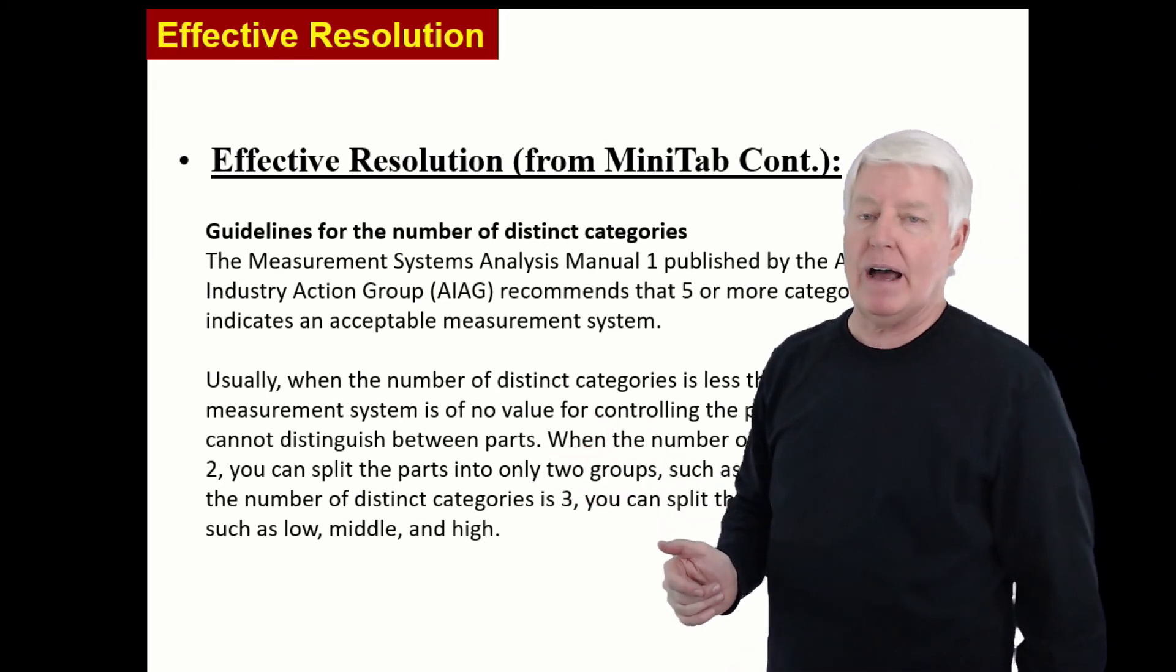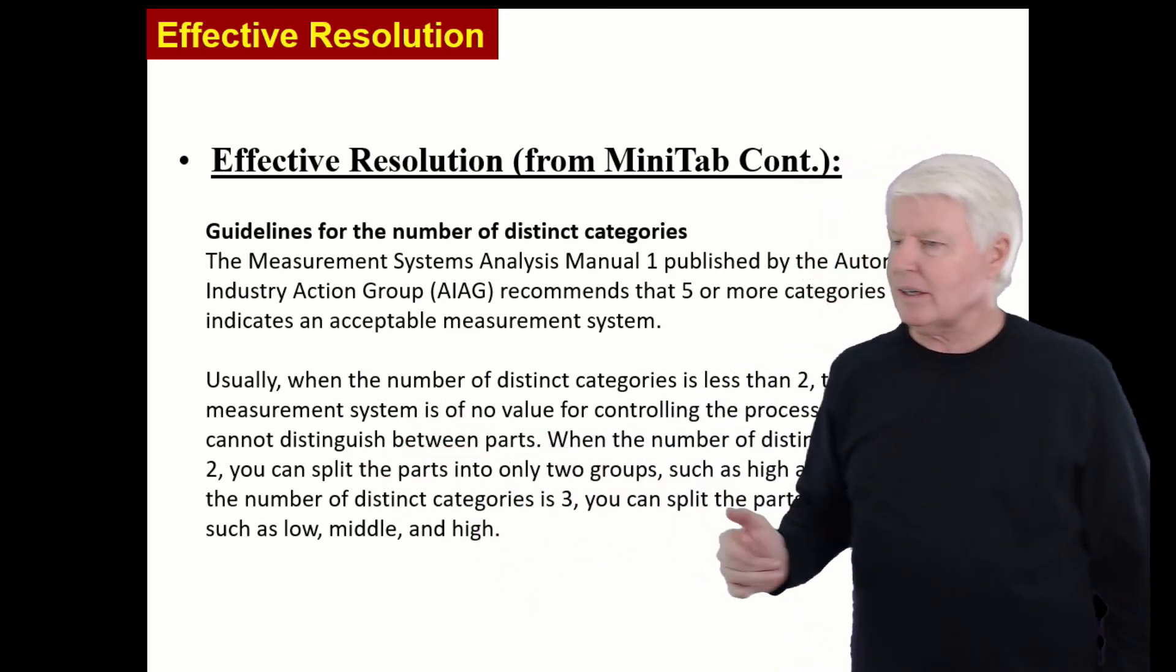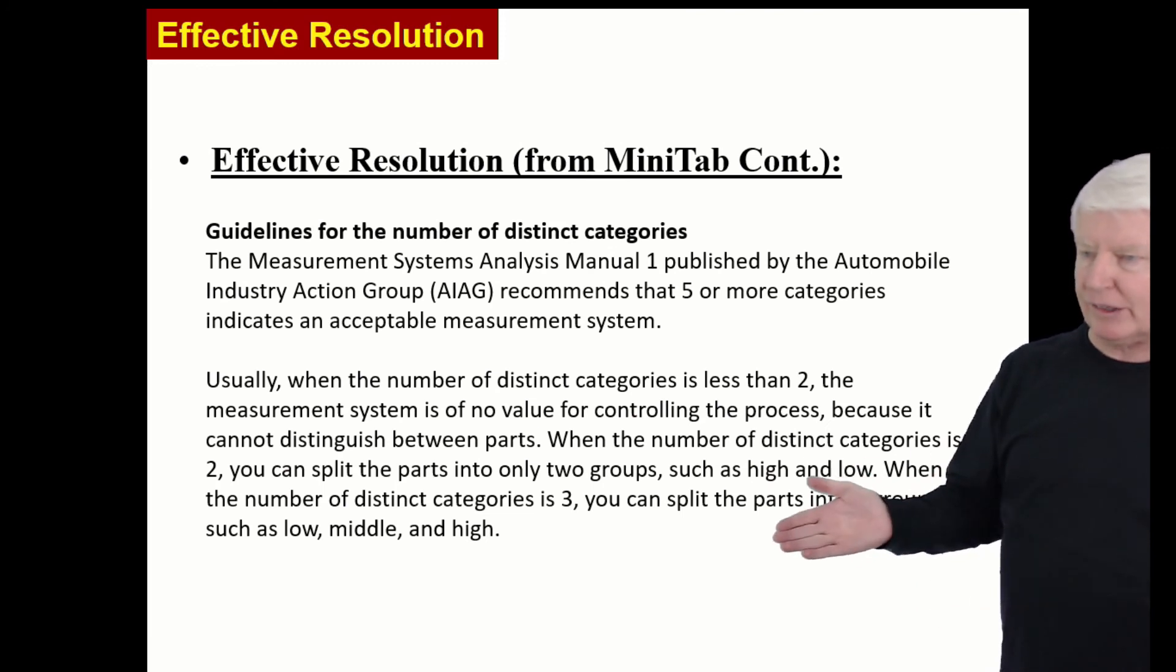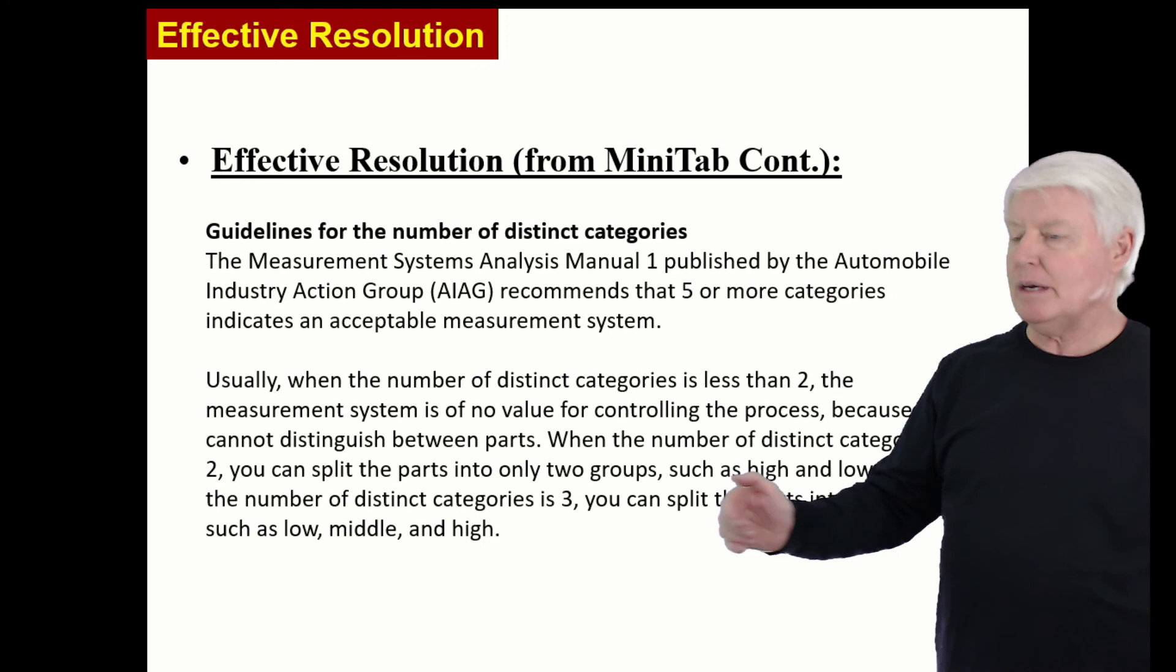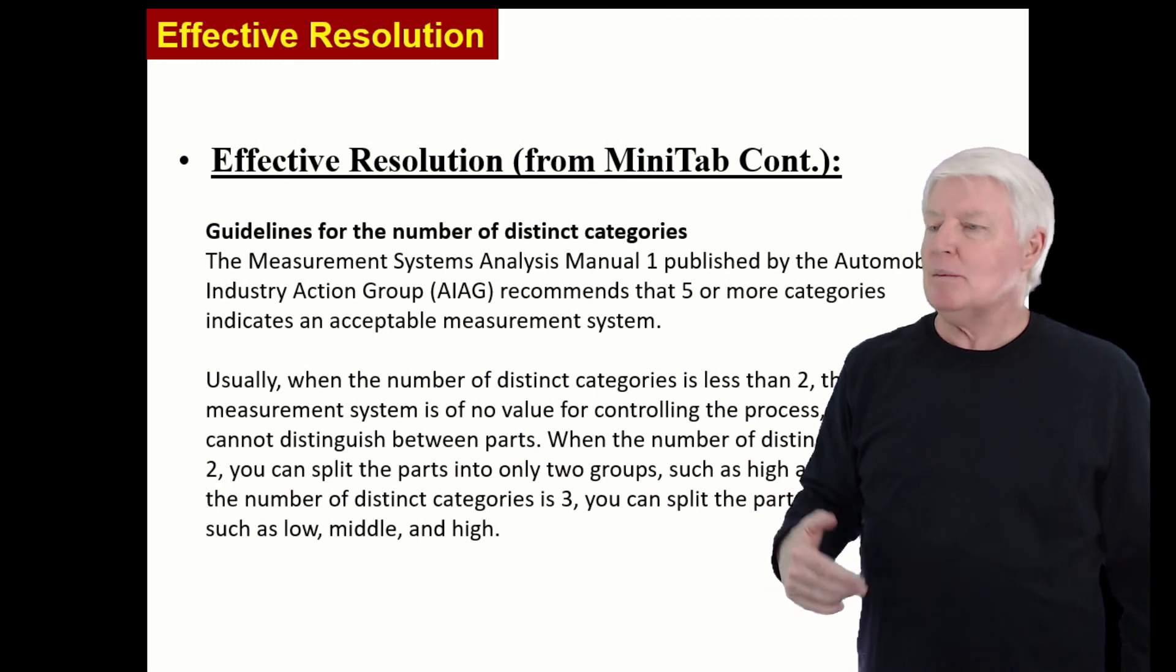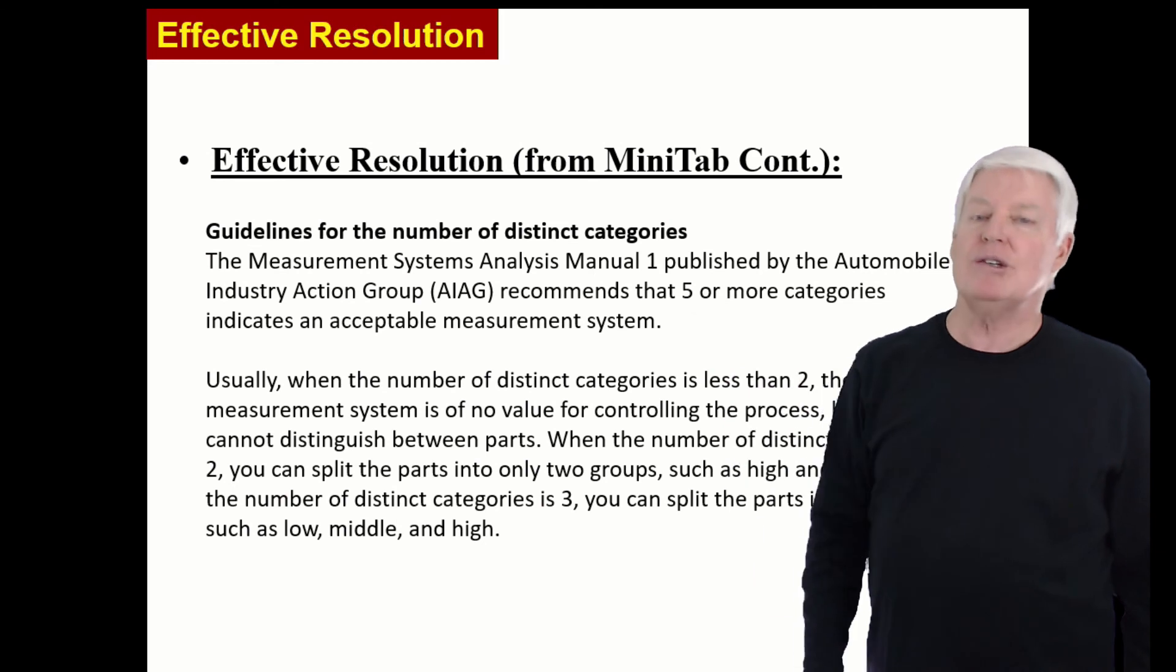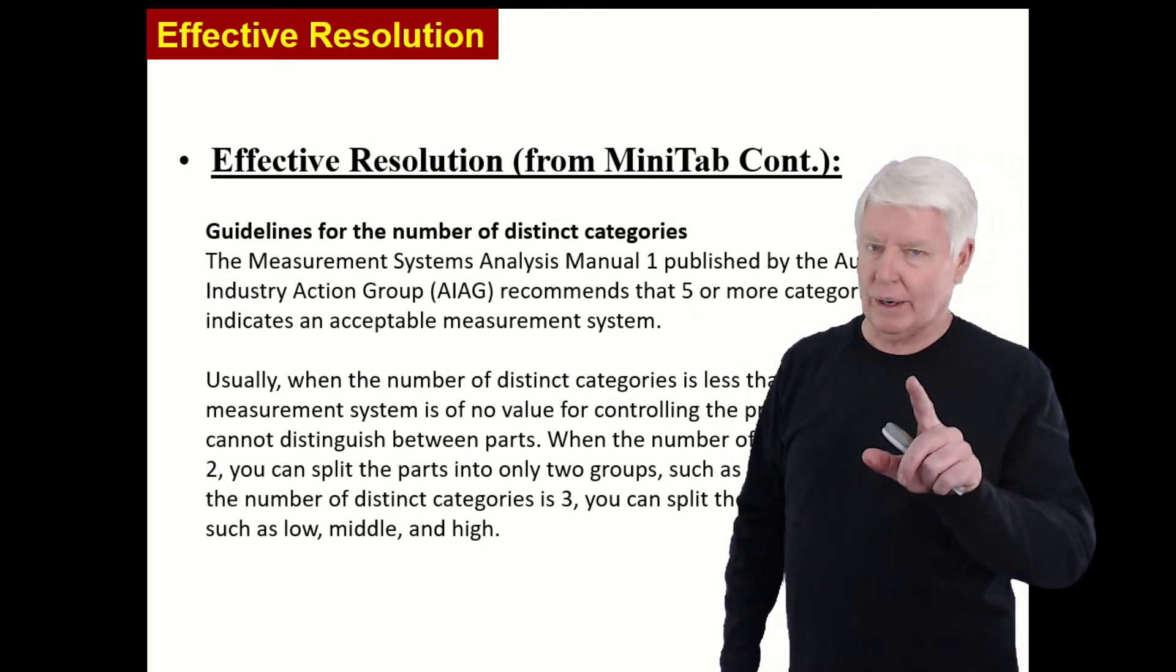So maybe that data is still valuable to you. That's attribute data, right? One or two, or two subgroups, pass, fail, for example. But three is even a little better, low, middle, high. So you may be able to use low, middle, high to help you in a statistical analysis. And you may be able to use pass, fail. But if you're going to do variables, data, objective problem solving, you should have an NDC of five or greater.